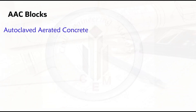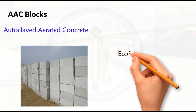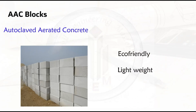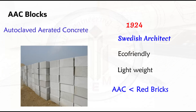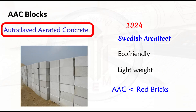Autoclave aerated concrete is an eco-friendly and certified green building material which is lightweight, high insulating, load bearing, and durable. The weight of AAC blocks is three times lighter than red bricks, hence it reduces the dead weight of the structure. AAC was developed in 1924 by a Swedish architect. Since aluminum powder is added as a raw material, the concrete has 70 to 80 percent air in it, and it is baked in an autoclave — a type of furnace — hence the name autoclave aerated concrete.